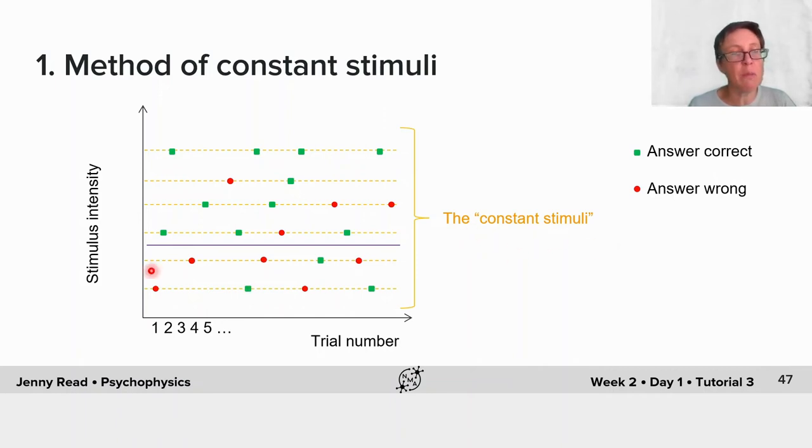These yellow dashed lines mark the values I've chosen, the constant stimuli. On trial one, I happen to choose low intensity. On trial two, a medium one. On trial three, a high intensity. But these are just random. On every trial, I'm randomly picking a different one of these constant stimuli.